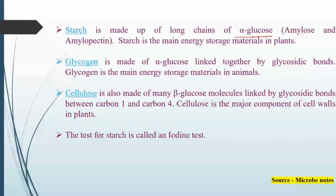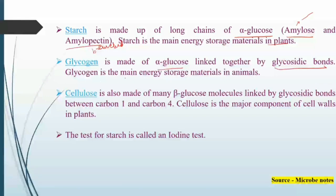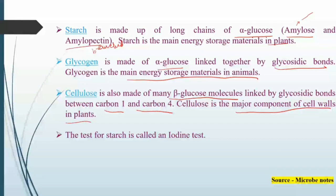Starch is made up of long chains of alpha-glucose — both amylose (linear) and amylopectin (branched) — and is the main energy storage material in plants. Glycogen is made up of alpha-glucose linked by glycosidic bonds and is the main energy storage material in animals. Cellulose is made of many beta-glucose molecules linked by glycosidic bonds between carbon one and carbon four, and is the major component of cell walls in plants. Starch can be tested using the iodine test.